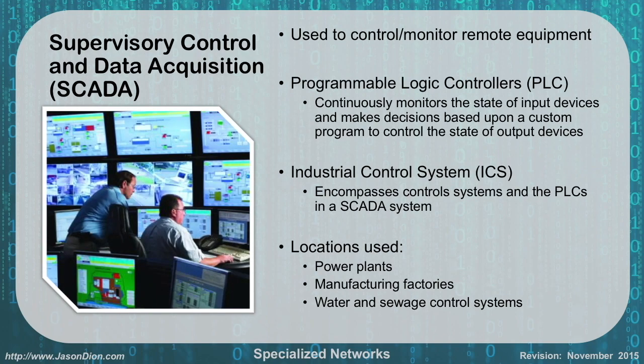SCADA networks — supervisory control and data acquisition networks — are used to control and monitor remote equipment. They are made up of programmable logic controllers, or PLCs, which continuously monitor the state of input devices and make decisions based upon custom control programs to control the state of output devices. For example, a PLC might monitor the temperature of water and turn on a heat pump if it gets too low. These are usually used in factories, power plants, electrical providers, or dams.